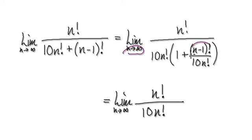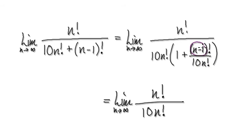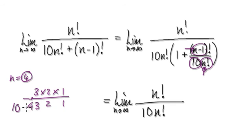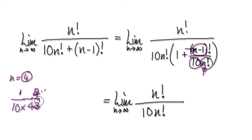Now as n tends to infinity, this thing here is going to head towards 0. You've got this 1 here — that's the nice thing about having 1 plus something. This something goes to 0 as n tends to infinity. Let's understand why. Notice that this thing here is 1 less than n. So let n equal 4: at the top you've got n minus 1, which is 3 times 2 times 1, and at the bottom you've got n factorial — 4 times 3 times 2 times 1 — times 10. These will cancel each other out, giving you 1 over 10 times 4.